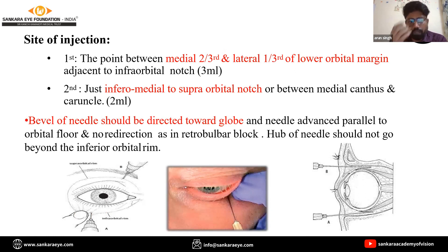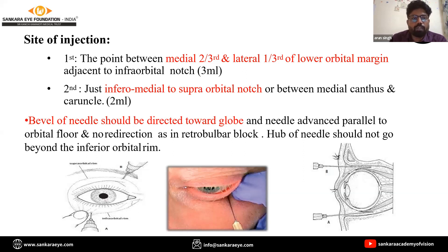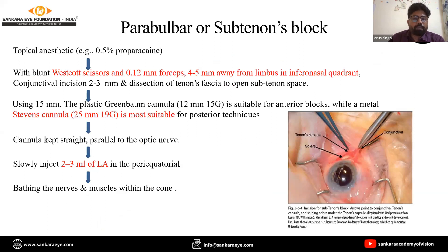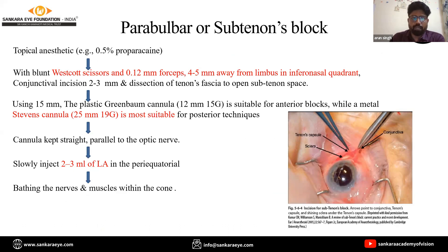During peribulbar anesthesia, the bevel of the needle should be directed toward the globe only, and we should always check for eye movement before pushing the block. For the sub-Tenon's block, we first instill topical proparacaine, then with forceps make an incision approximately four to five mm from the limbus in the inferonasal quadrant to create a sub-Tenon's space.